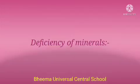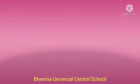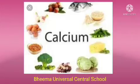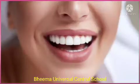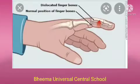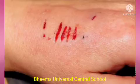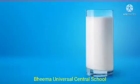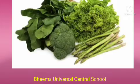Next is deficiency of minerals. There are various minerals needed by the human body. The first one is calcium. Its functions are to strengthen bones and teeth and help in clotting of blood. Deficiency causes rickets in children and osteoporosis in adults. Symptoms are brittle bones, excessive bleeding, stunted growth, and weak teeth and bones. Sources are milk and green leafy vegetables.